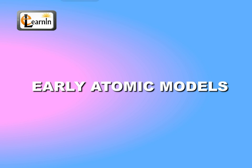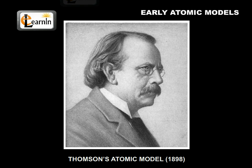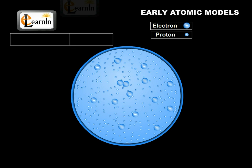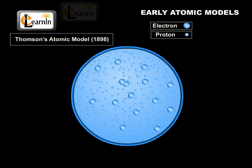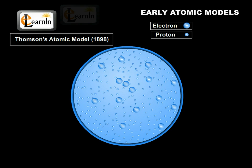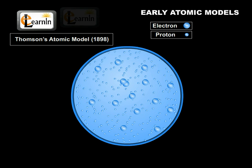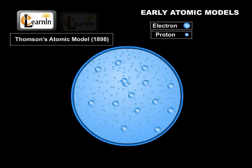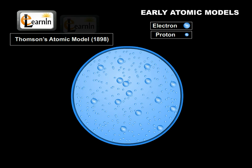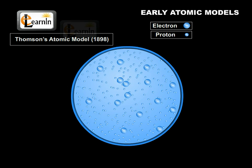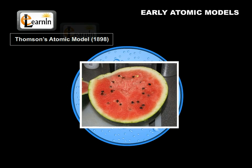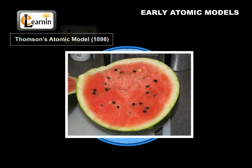Thomson's Atomic Model, 1898. According to this model, the positive charge of an atom is thought to be distributed uniformly over the entire body of the atom, with electrons embedded in it — similar to the seeds of a watermelon — so as to make the atom electrically neutral.